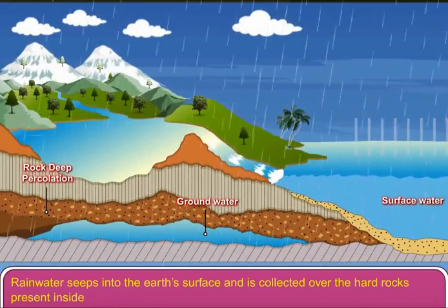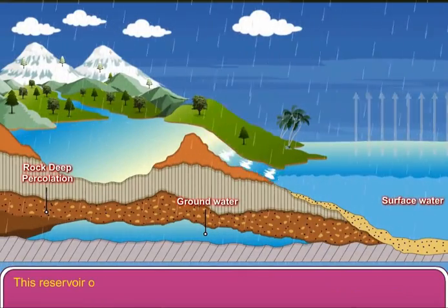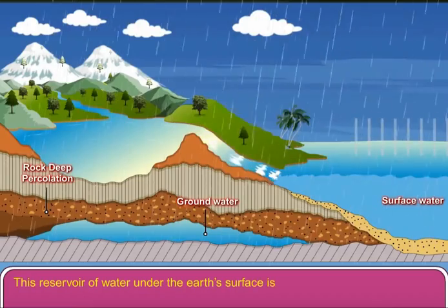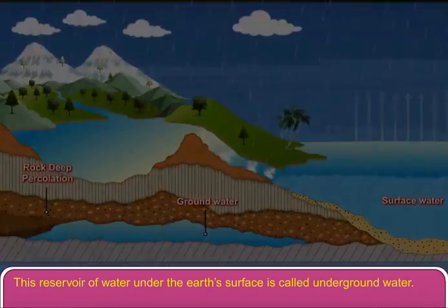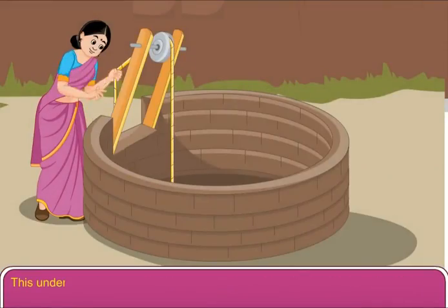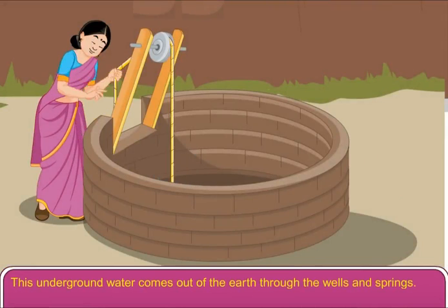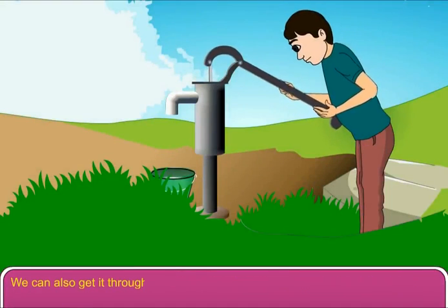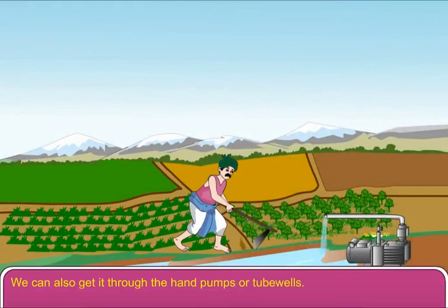Rainwater seeps into the earth's surface and is collected over the hard rocks present inside the earth. This reservoir of water under the earth's surface is called underground water. This underground water comes out of the earth through wells and springs. We can also get it through hand pumps or tube wells.